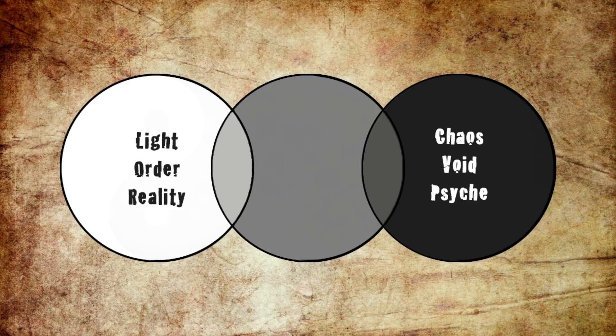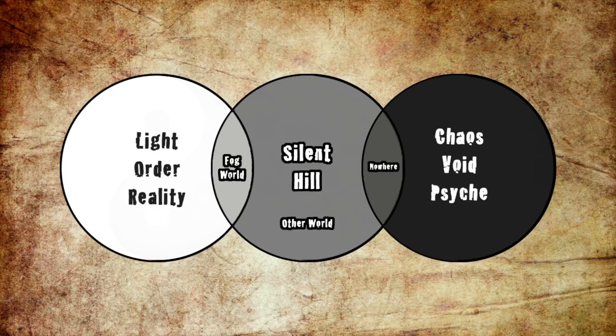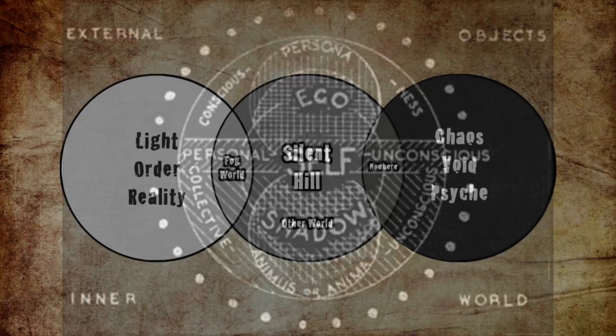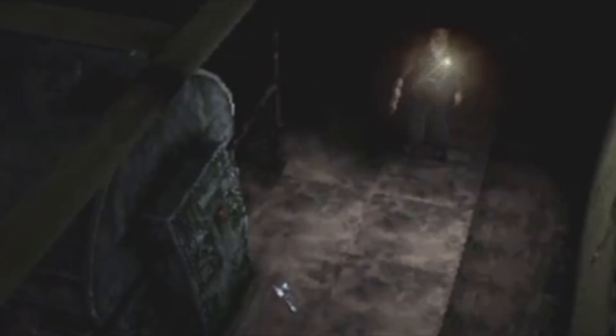Then there were the overlapping areas. I dubbed the left overlap as the fog world, the right overlap as Nowhere — the location from the first game — and the middle as the other world. If we work with the hypothesis that the psyche is in part material and the material world is in part psyche, this diagram represents that duality. The left circle is order and consciousness; the right circle is disorder and unconsciousness. In respect to the material world, the left is objective reality and the right is chaos and void. As you move between them, reality constructs and deconstructs accordingly. The town of Silent Hill sits on the edge between these dualities — the border world into which people enter from reality, and from the void our unconscious imagery comes to life, and there we confront one another.